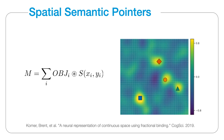SSPs fit within the broader SPA framework. One could take the semantic pointers representing a set of objects or landmarks, bind each of their locations' SSP representation, and then add them together to make a memory vector which represents a scene.